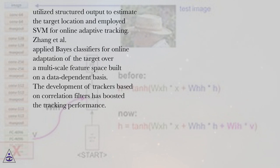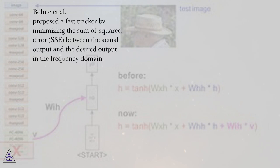The development of trackers based on correlation filters has boosted the tracking performance. Bolna et al. proposed a fast tracker by minimizing the sum of squared error SSE between the actual output and the desired output in the frequency domain.